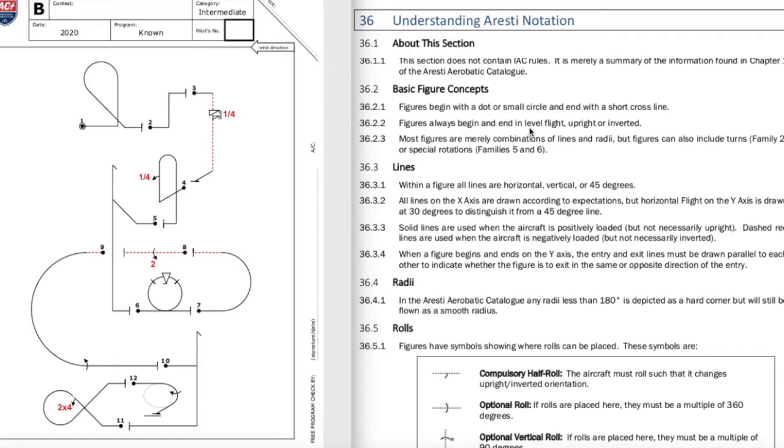Figures always begin and end in level flight, upright or inverted. So you're always going to end a figure in level flight in one way or another. You can see everything is ending in some form of level flight. It can be either upright which is annotated here by the solid line or it can be inverted which would be that dotted line. So you can see figure seven is ending horizontal but you're inverted.